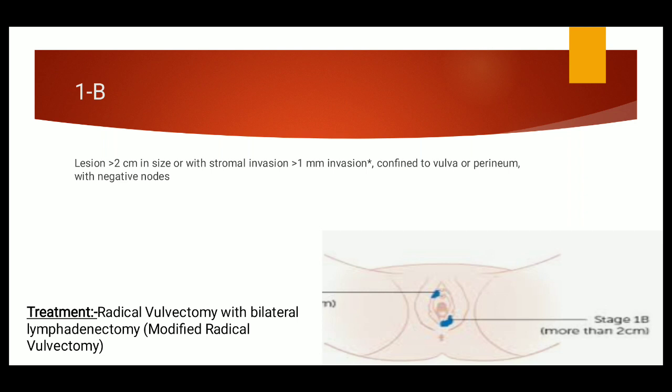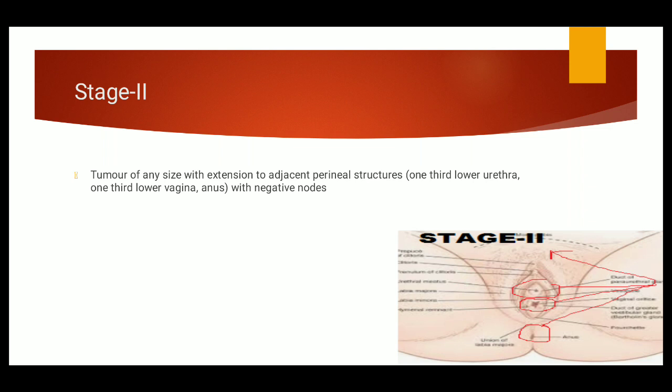Now coming to Stage 2. In Stage 2, what happens is the tumor is of any size with extension to adjacent perineal structures: one-third or lower-third of the urethra, one-third of the vagina, and anus, with negative lymph nodes. Lymph nodes are negative in such cases.